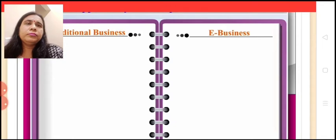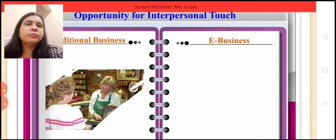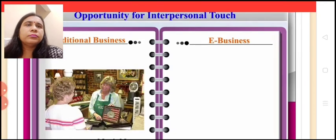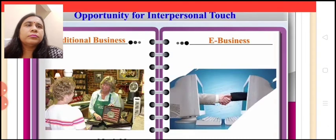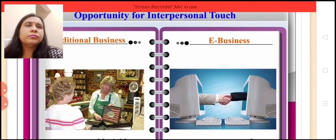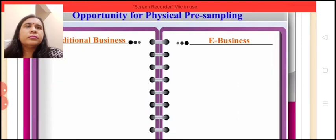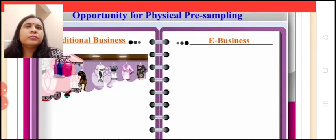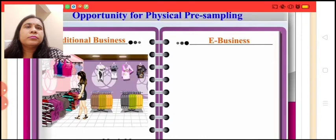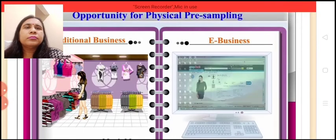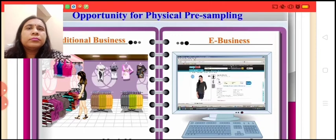Opportunity for interpersonal touch: In traditional business, the customer directly deals with the seller, whereas in e-business the identity of the supplier is unknown. Opportunity for physical pre-sampling: Physical pre-sampling of the product is possible in case of traditional business but not in case of e-business.